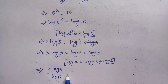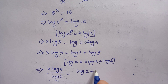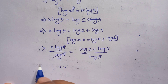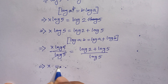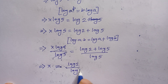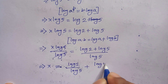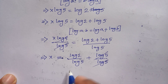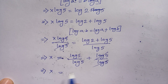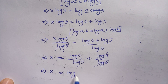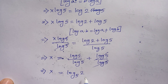So 4X times log of 5 is equal to log of 2 plus log of 5. Now we divide both sides by log of 5. This log of 5 and this log of 5 cancel, so we get X is equal to log of 2 over log of 5, plus log of 5 over log of 5. This log of 5 and this log of 5 cancel. Therefore X is equal to log of 2 over log of 5, which can be written as log base 5 of 2, according to the change of base formula.